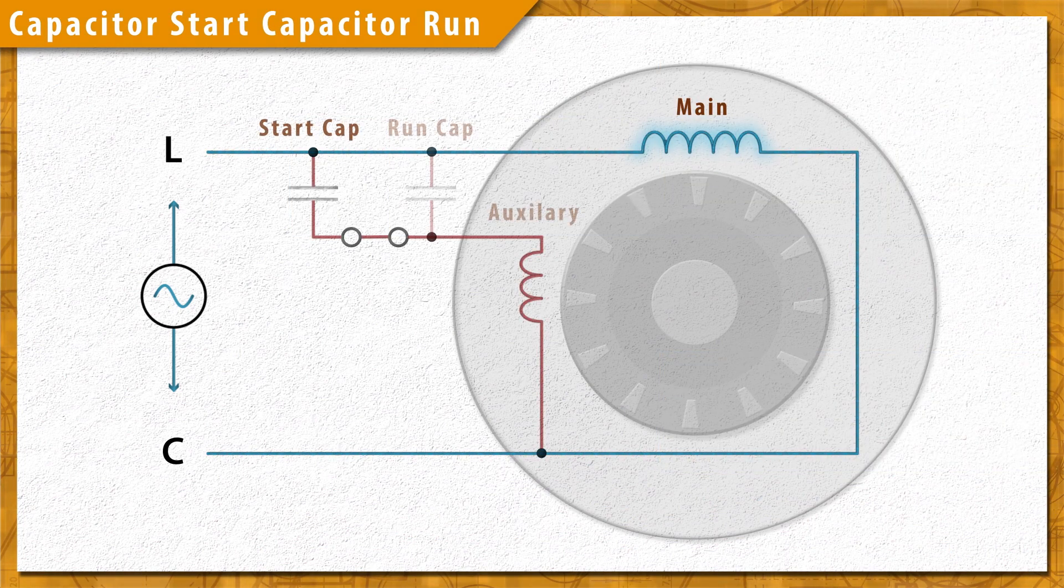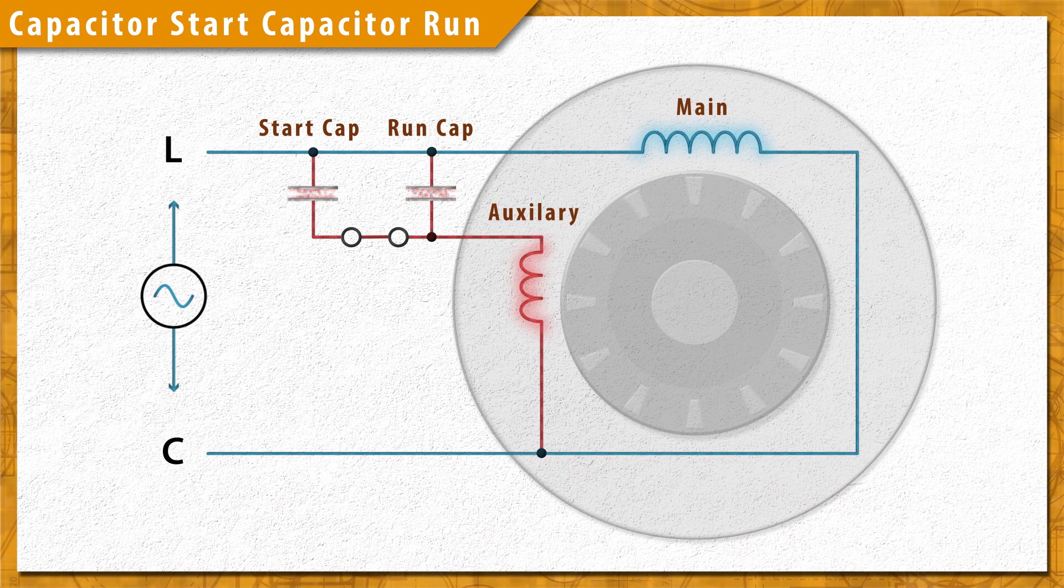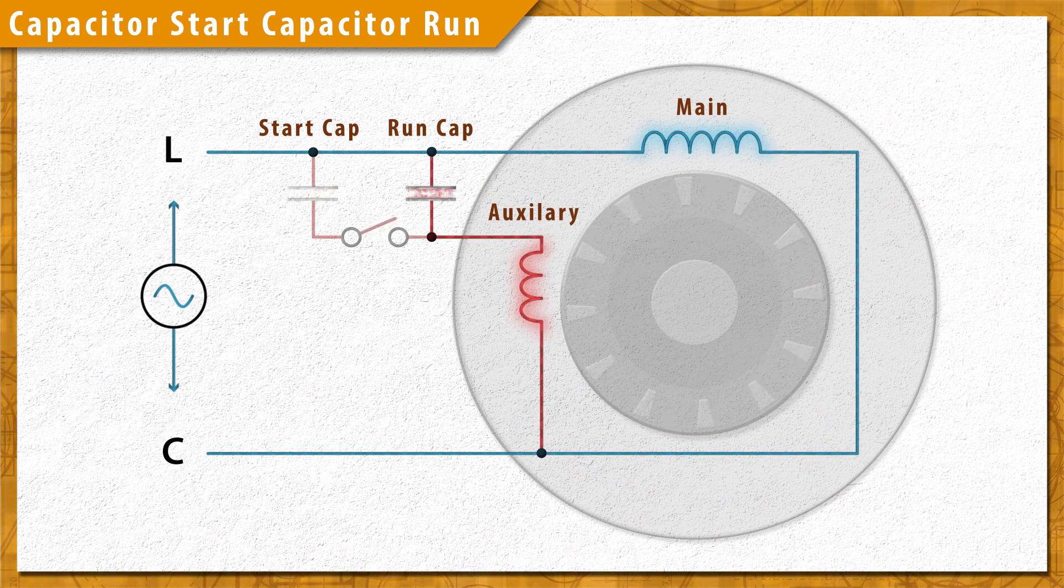Capacitor start, capacitor run, or CSCR motors are similar, but in addition to a start capacitor, these motors use a run capacitor. After startup, the auxiliary winding and run capacitor remain in the circuit, which increases the efficiency.